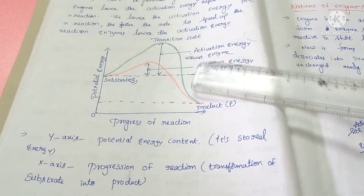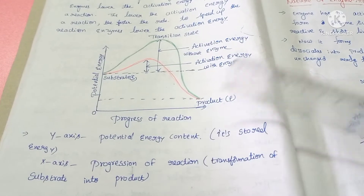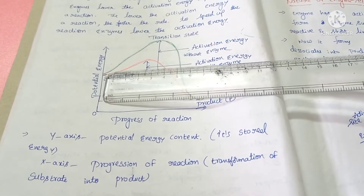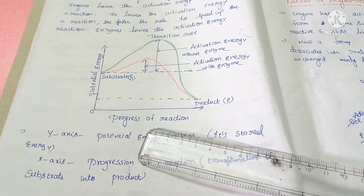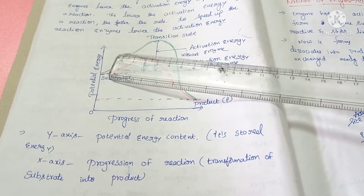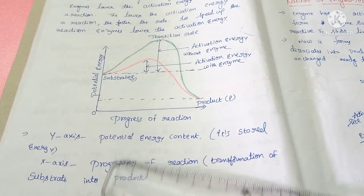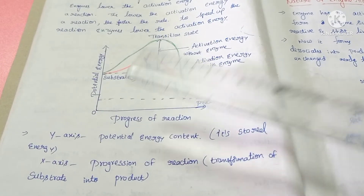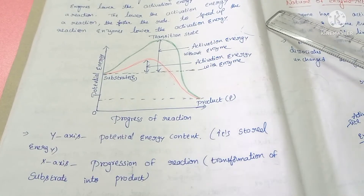If we see this graph, it has an x-axis and y-axis. On the y-axis we have potential energy, and on the x-axis we have the progress of reaction. Potential energy is nothing but stored energy. The progression of reaction means the transformation of the substrate into the product.